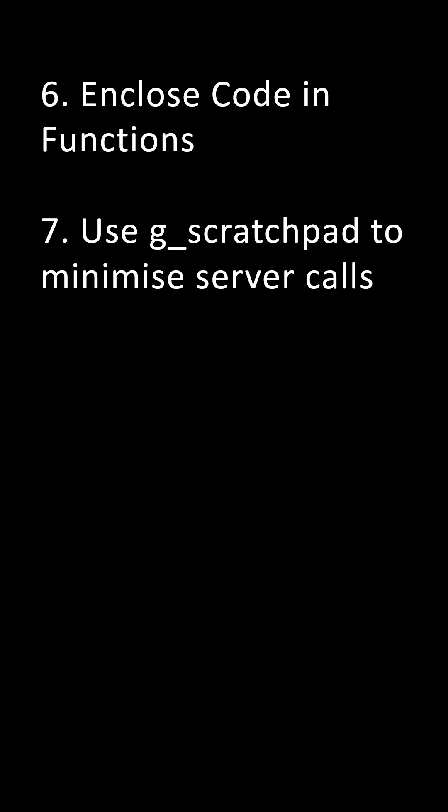Point number seven: Use g_scratchpad to minimize server calls. The g_scratchpad object passes information from the server to the client. Known required values can be retrieved by a display business rule and made available to client scripts by storing them on the global JavaScript object called g_scratchpad.